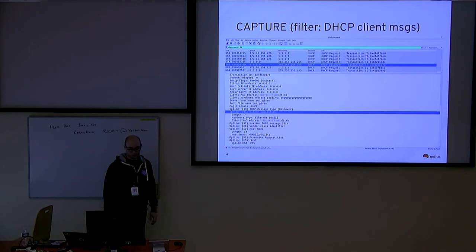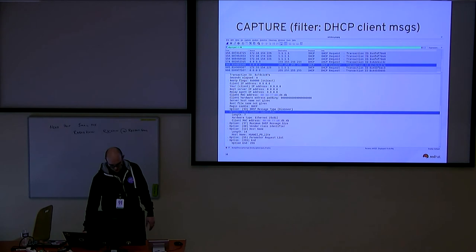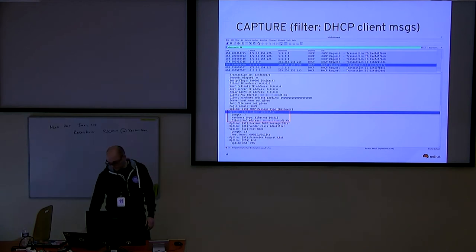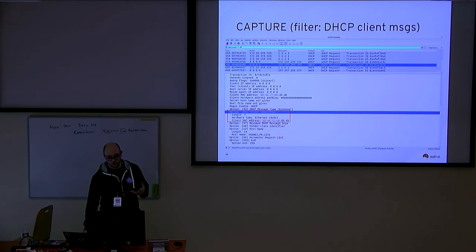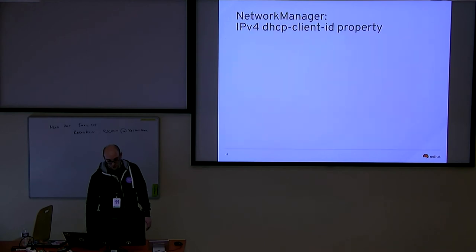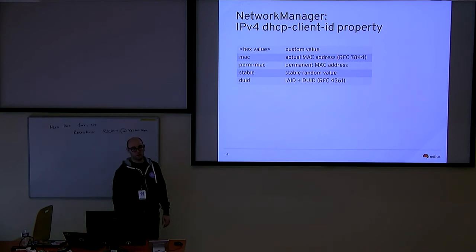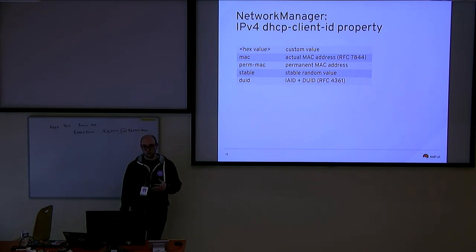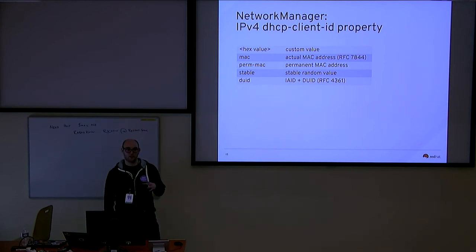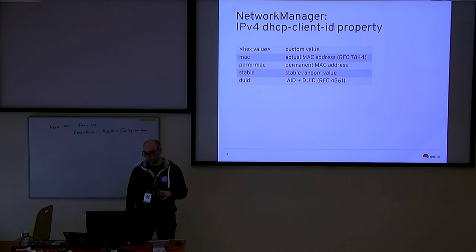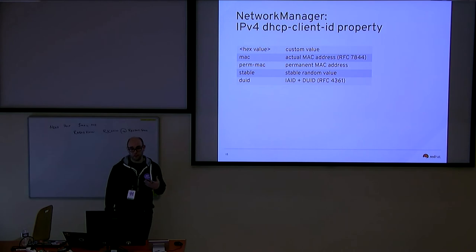Let's go back to our capture — just an example. Here the client just puts its MAC address in the client identifier, so there's nothing new beyond what it already leaks by exposing its true MAC address. But what about NetworkManager? You can take care of the property DHCP client ID to have whatever you want there. You can put a custom value, or you can put "mac" — which uses your current MAC address, as mandated by the anonymity profile specification.